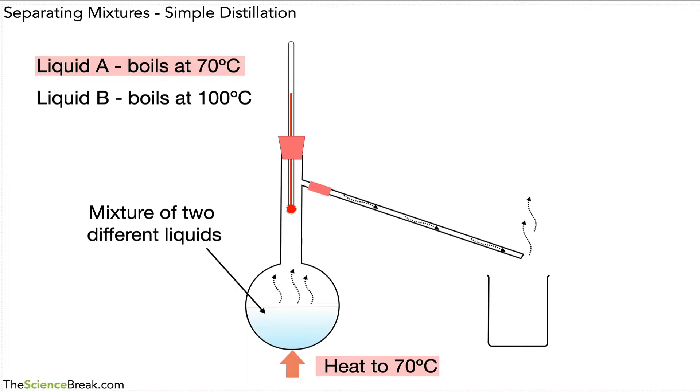In actual fact, what we have here is another part of this apparatus wrapped around that delivery tube. This allows some cool water to pass over the delivery tube. This is called a condenser and it will cool the contents of that delivery tube.